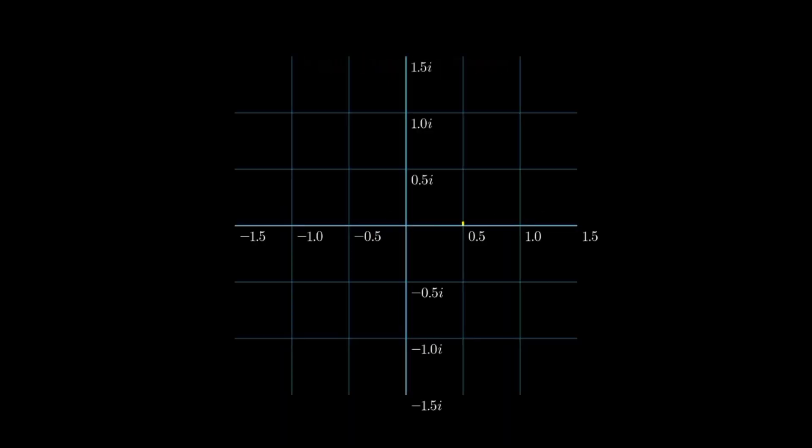Step 5. Exponentiate to solve. To undo the logarithm, exponentiate both sides. So e to the i theta equals cosine theta plus i sine theta. Finally, replace theta with x since it's just a variable name. And we arrive at Euler's beautiful formula: e to the ix equals cosine x plus i sine x.